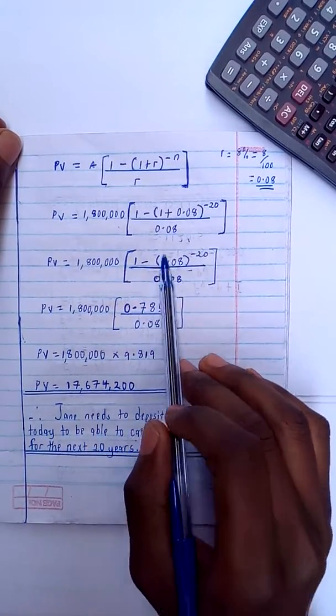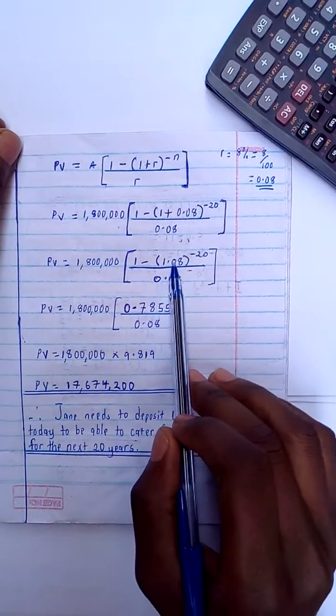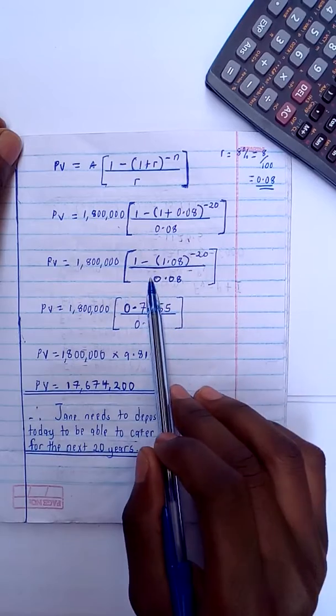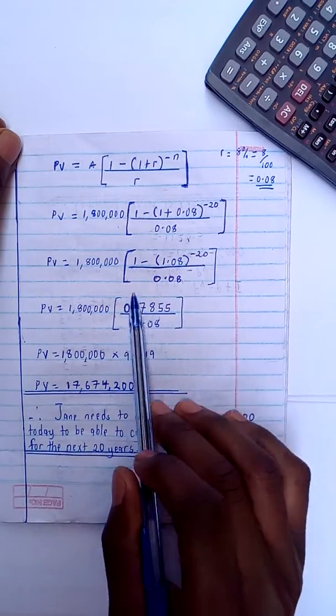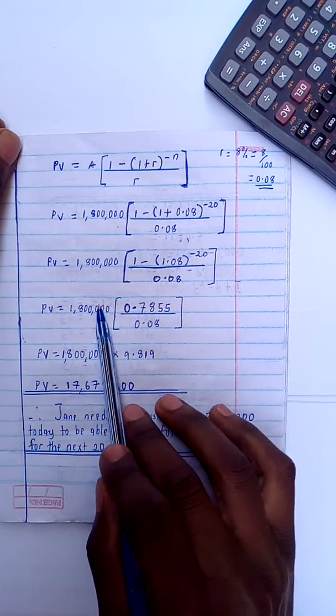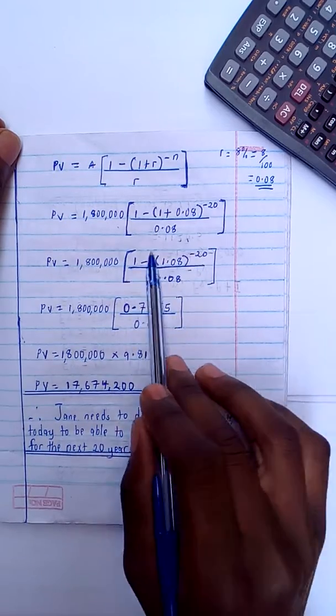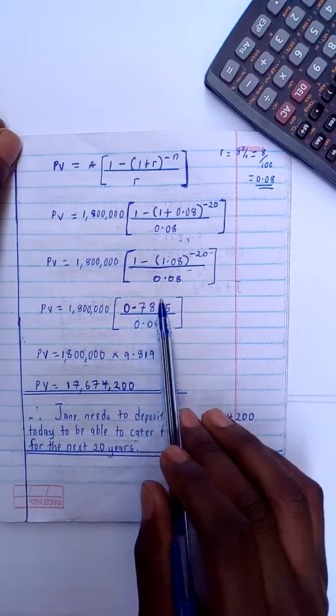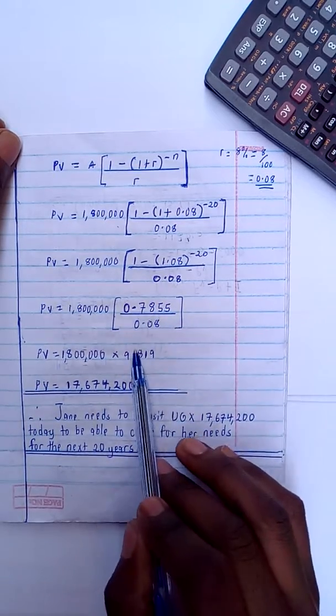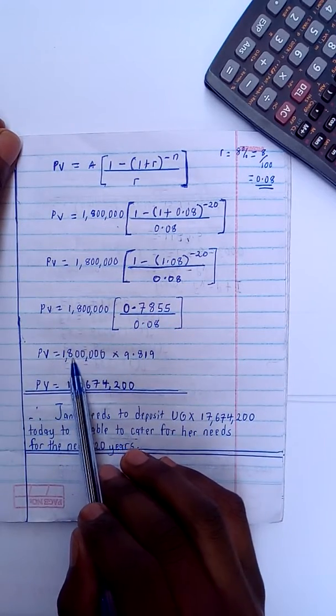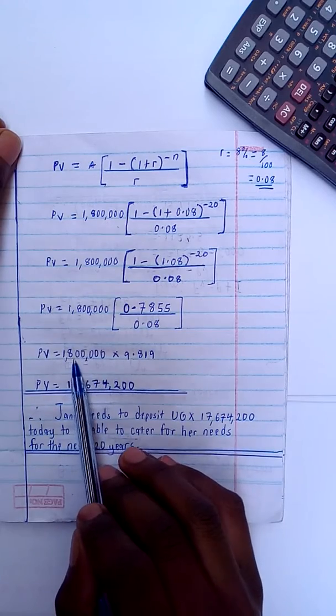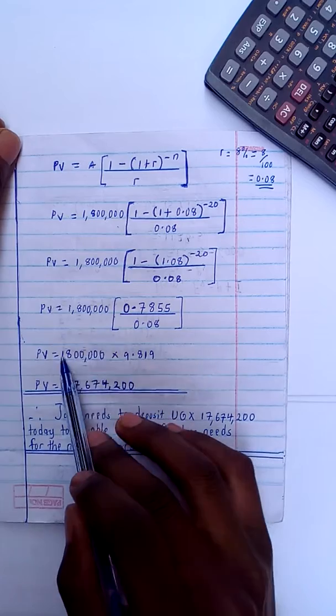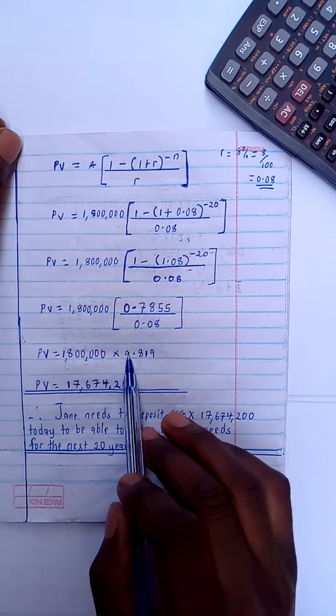After doing that, I move on to this. Then I say one minus this plus this, I get to this bracket to the power negative 20 and divide by 0.08. After knowing that, I continue. I do this, I work out for this, I get to this, divide by the 0.08. So after getting this, it will lead to my answer.